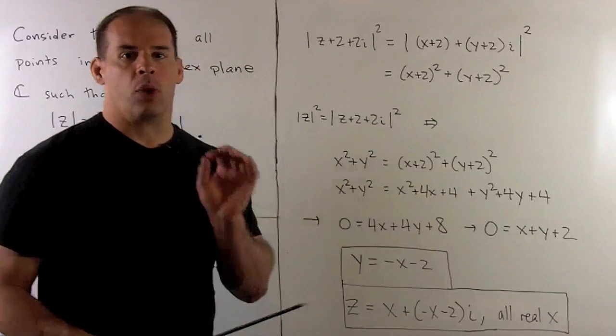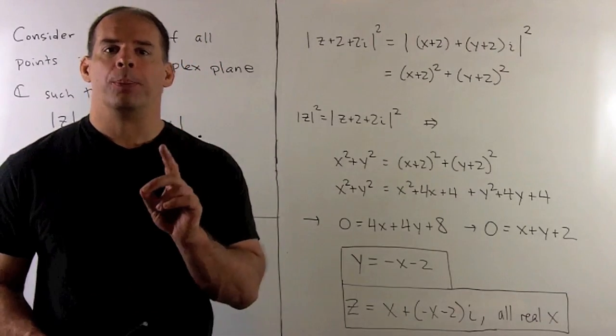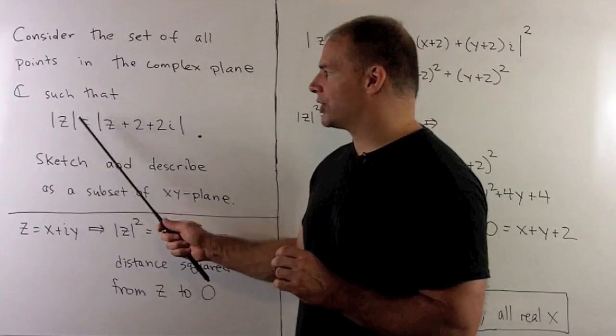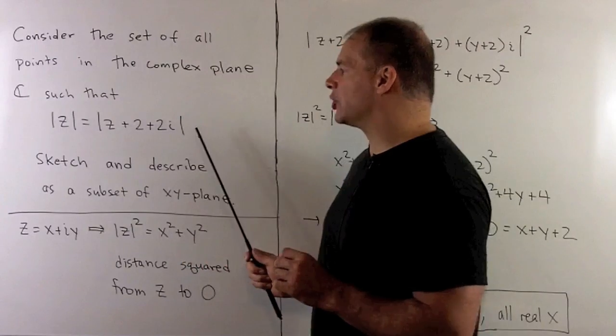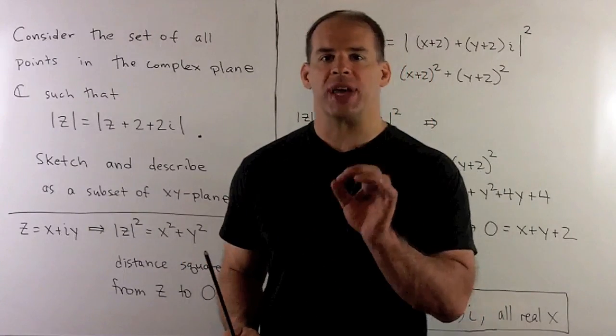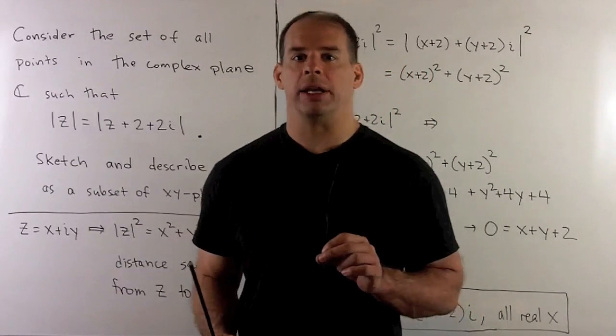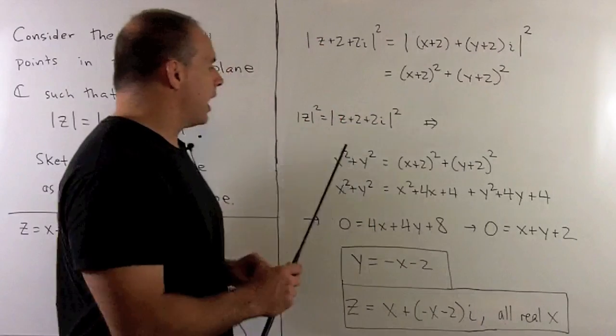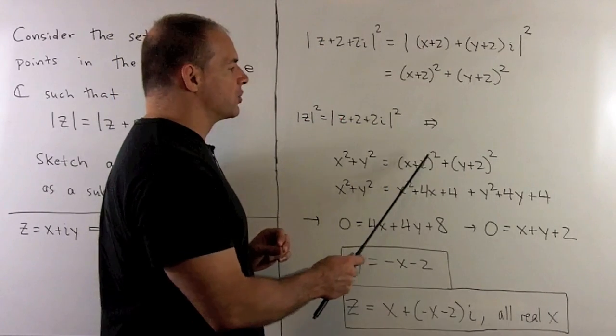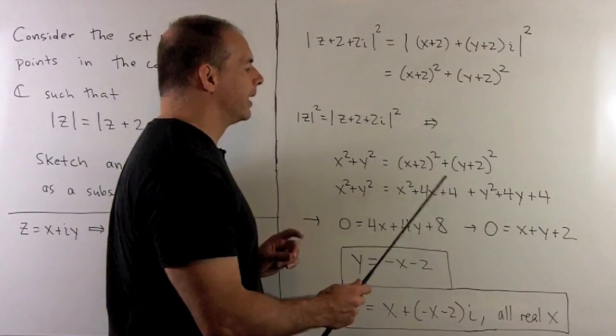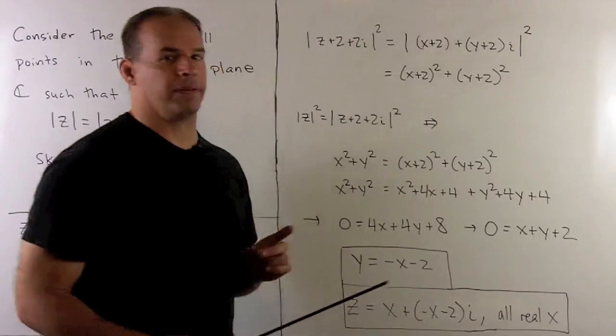Now I can work with this. So if I have modulus of z equal to this modulus, if I square both sides we keep the equality. So I'll have x² + y² = (x+2)² + (y+2)². Now I can expand and simplify.